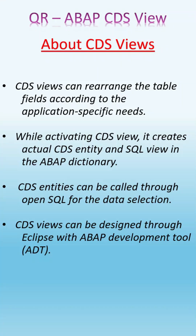This is a quick reference about CDS views. A CDS view pulls different fields from different tables based on business needs — similar to a regular view. You just rearrange the table fields for application-specific needs. When activating a CDS view, it creates two things in the data dictionary: one is the CDS entity and one is a SQL view.